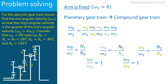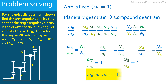Consequently, the speed ratio ω₈/ω₂ = (N₂·N₅·N₇)/(N₄·N₆·N₈). Or also, the angular velocity of the ring 8 when the arm 3 is fixed is equal to (N₂·N₅·N₇)/(N₄·N₆·N₈) times ω₂.